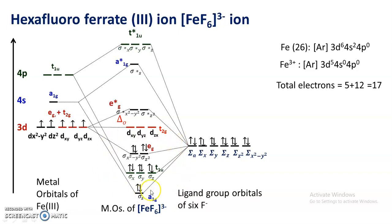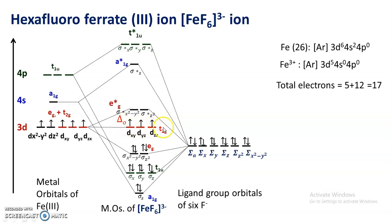These 12 electrons in the bonding molecular orbitals preferably come from the ligand group orbitals, because bonding MOs are energetically very close to the ligand group orbitals. The 13th electron enters the non-bonding t2g orbital. Electrons in the non-bonding t2g orbital come purely from the metal ion. The 14th and 15th electrons also enter t2g, with Hund's rule applied — no pairing until all orbitals are singly occupied.